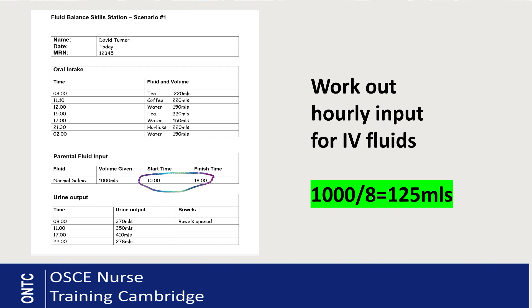First, you need to work out the hourly input for IV fluids, because we can't just put 1000 mls in one hour if the fluid started at 10 and finished at 6. It's very simple: if your patient had 1000 mls of normal saline starting at 10 and finishing at 6, that's 8 hours. Divide the total input by the number of hours — 1000 divided by 8 — giving an hourly input of 125 mls per hour.